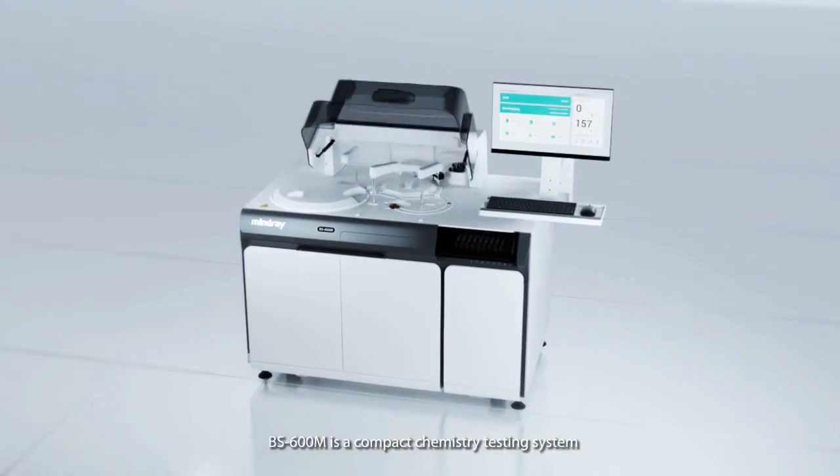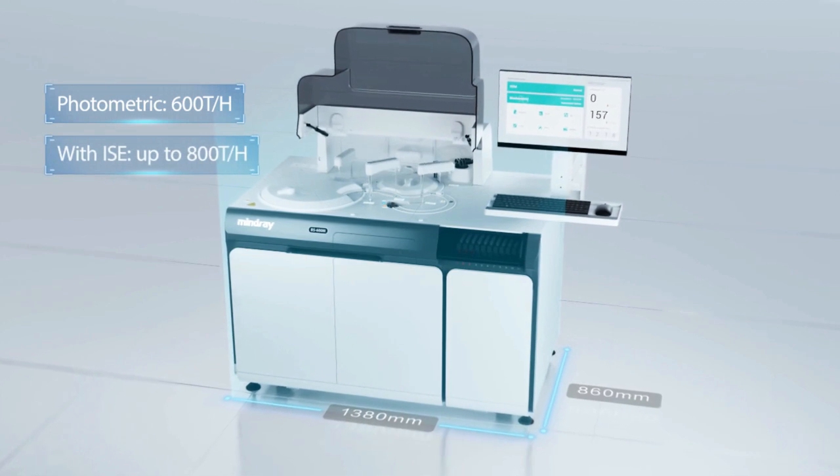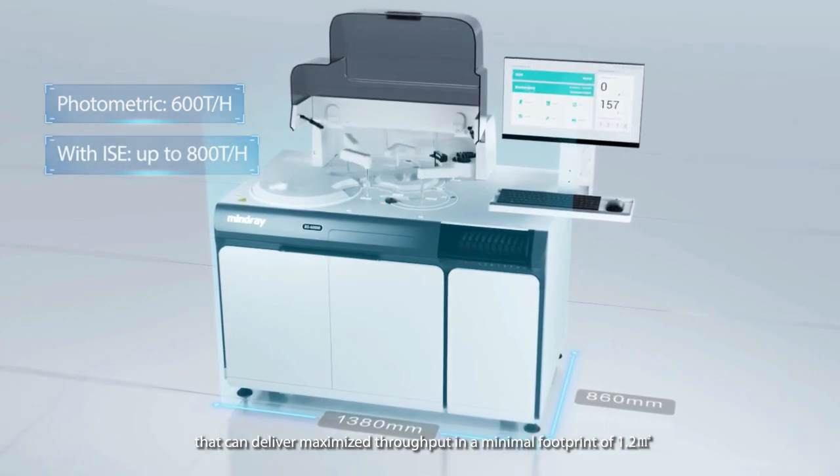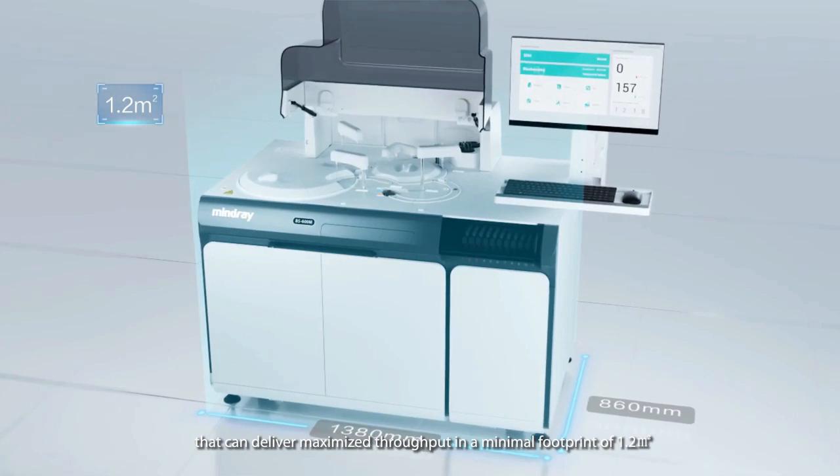BS 600M is a compact chemistry testing system that can deliver maximized throughput in a minimal footprint of 1.2 square meters.